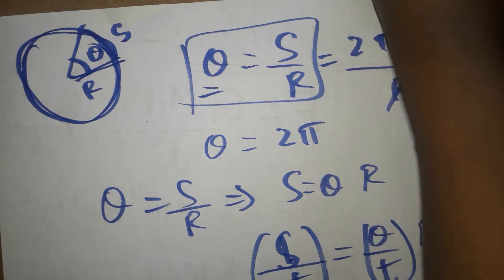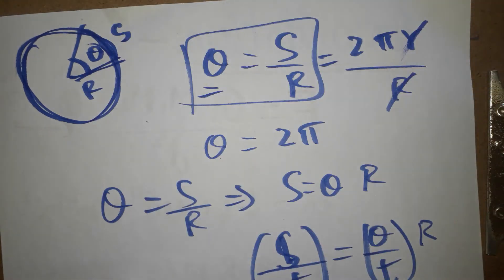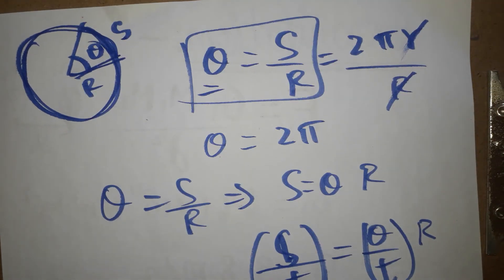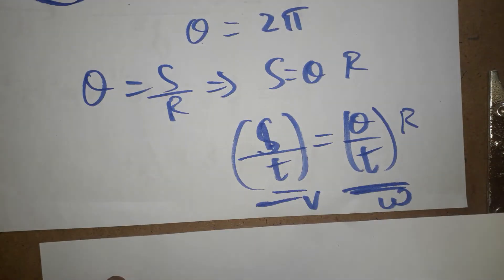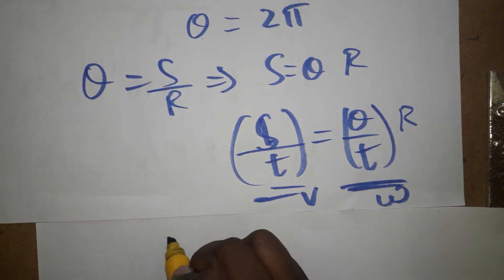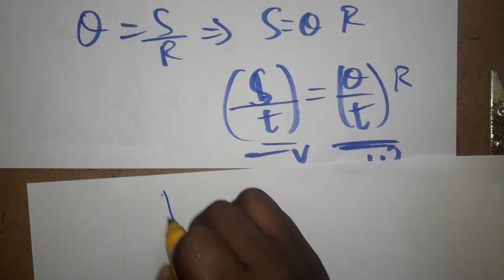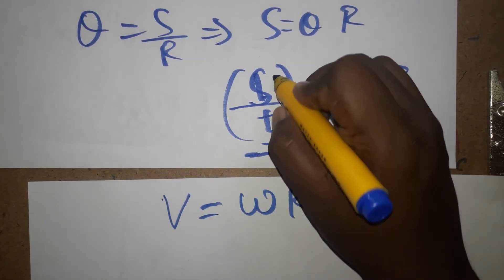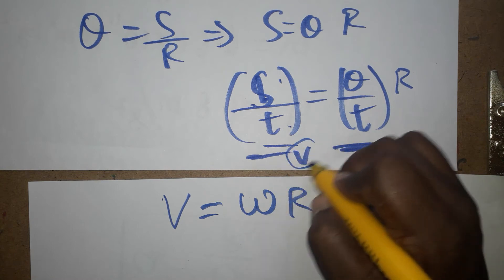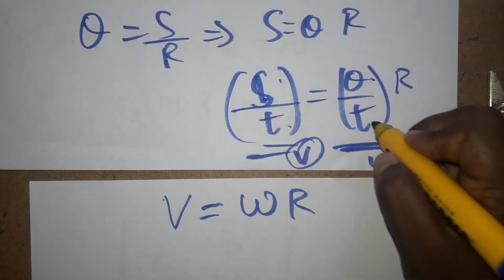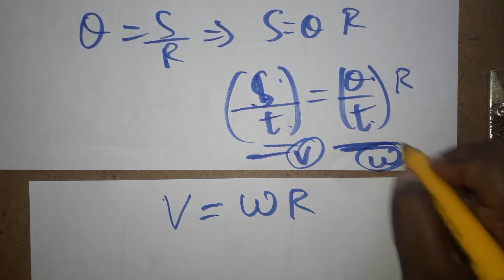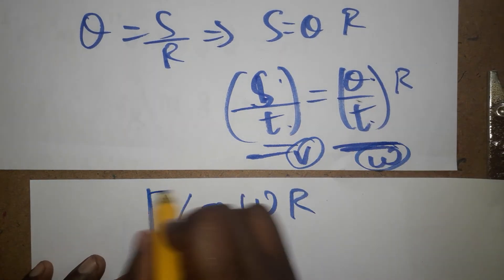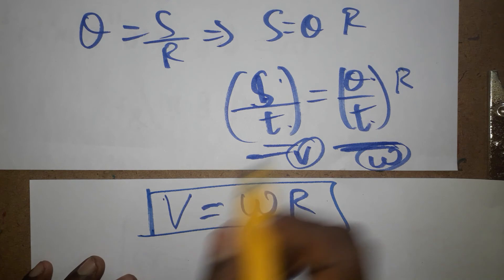The formula becomes v = omega times r. Displacement by time is linear velocity, and angular displacement by time is angular velocity. So v = omega r.